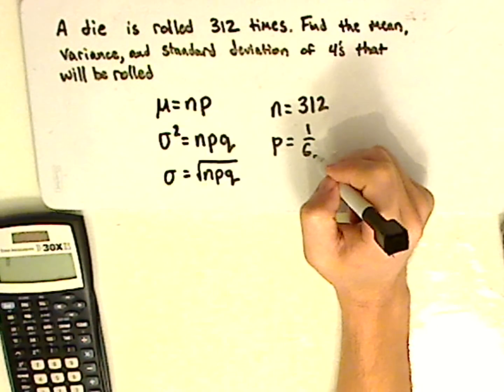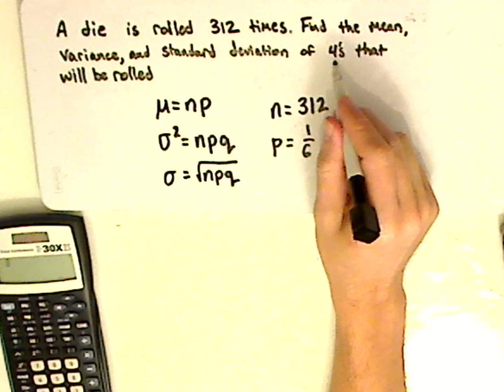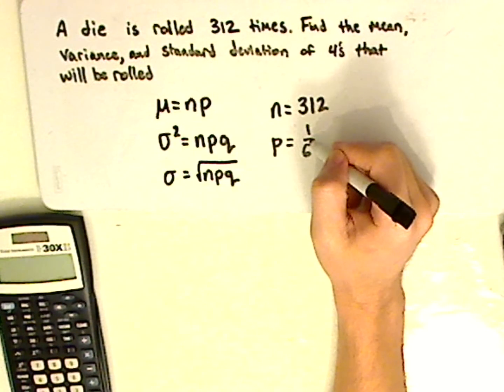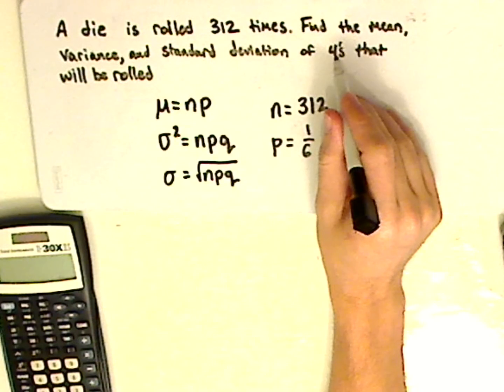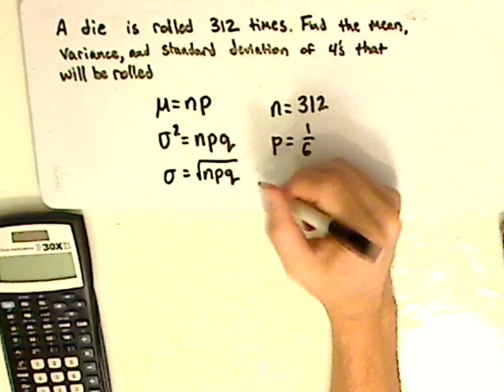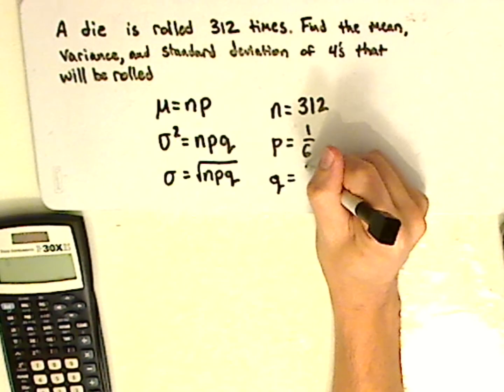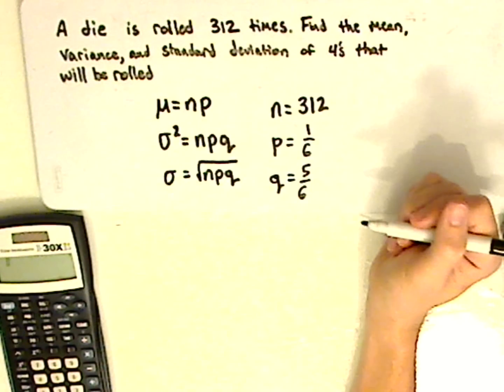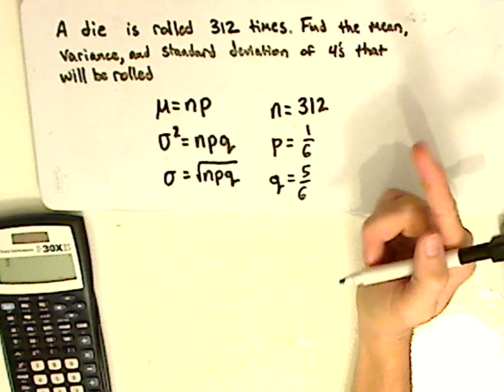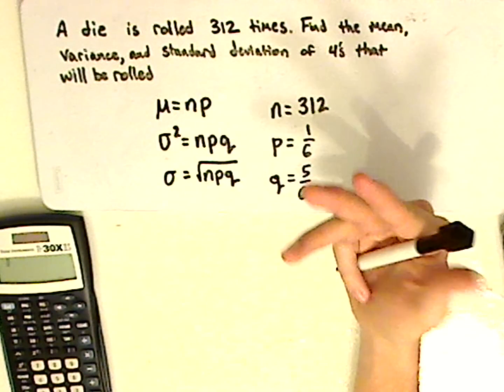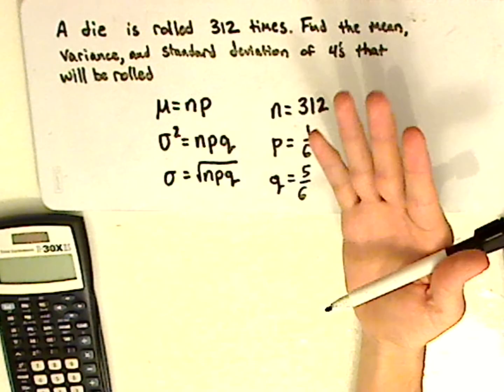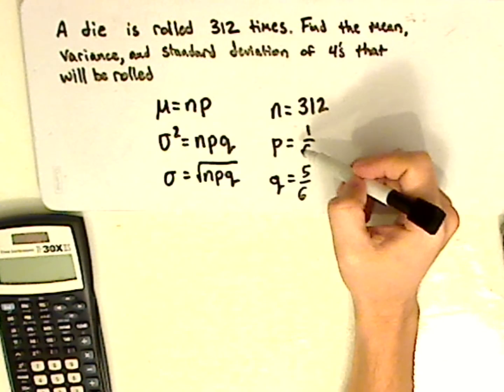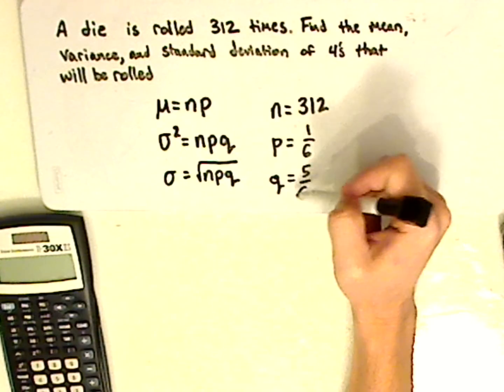The probability of failure is the probability of not getting a 4. The probability of getting a 4 would be 1 over 6. The probability of not getting a 4 would be 5 over 6, because I can either get 1, 2, 3, 5, or 6. So it's 5 out of 6. Also, these two, p and q, will always add up to 1.